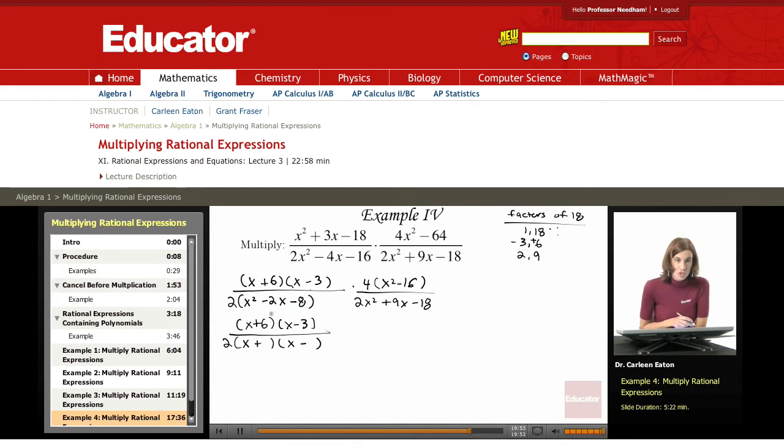1 and 8 are not going to add up to negative 2, so I tried 2 and 4. If I make the 2 positive and the 4 negative, I'll get x squared.